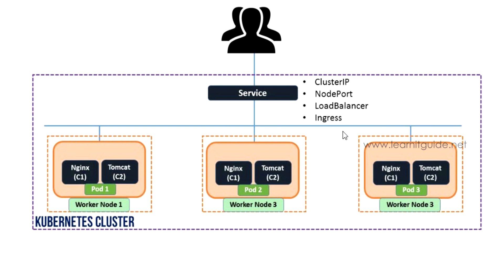ClusterIP is the default Kubernetes service, used for internal communication within the cluster. NodePort opens ports on each node and forwards traffic to the service at that node port. LoadBalancer is a network-level load balancer that forwards all external traffic to your service and target pods. Ingress acts as a router or controller to route traffic to services via a load balancer, and is useful when you want to use a single IP address to expose multiple services.